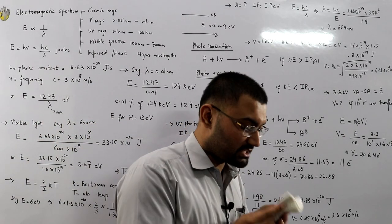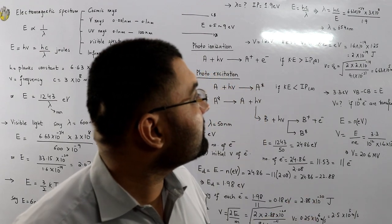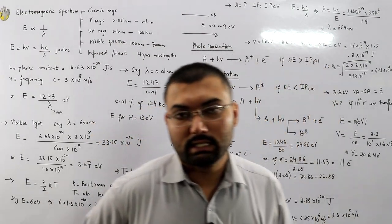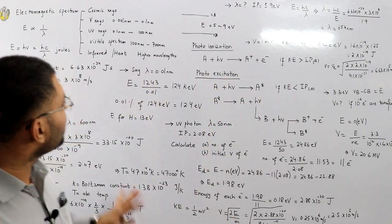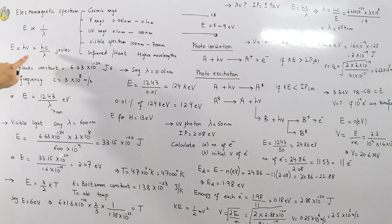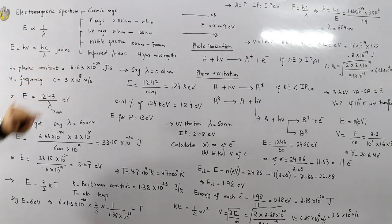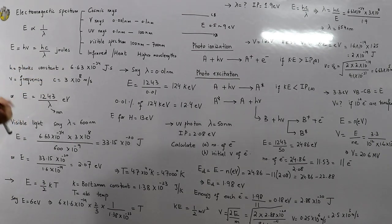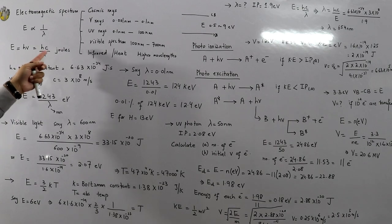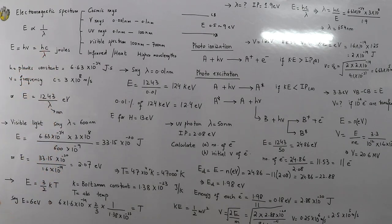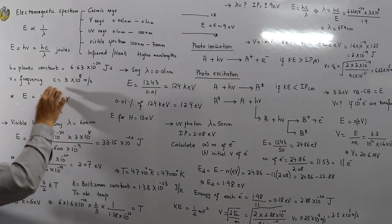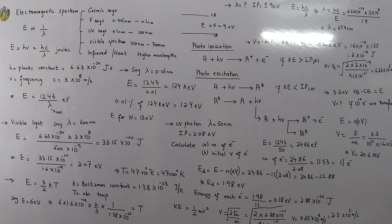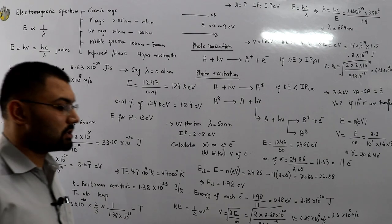To summarize the key formulas: E = hc/λ gives energy in joules; divide by 1.6 × 10⁻¹⁹ to convert to electron volts. If your wavelength is in nanometers, then E = 1243/λ gives the energy directly in electron volts.